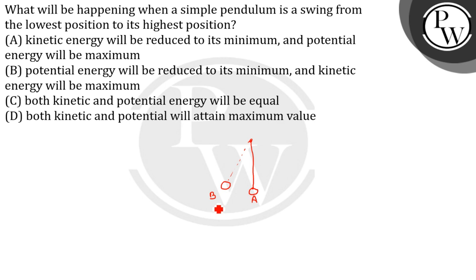So at the lowest position, the pendulum has its greatest speed. So all the energy of the pendulum is kinetic energy and there is no gravitational potential energy. Now this kinetic energy, when it goes higher up, then it will be reduced to minimum.